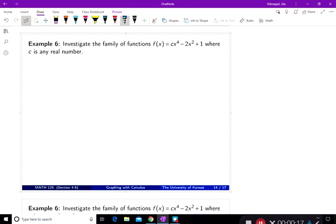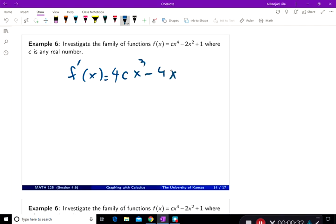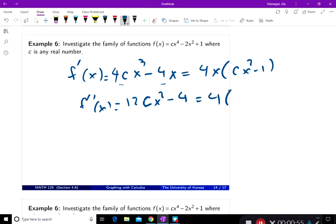If I'm trying to find how these shapes look like, the first thing I want to do is take the derivative of this because it's a polynomial. The derivative is going to be 4cx^3 - 4x, and I can factor out x and 4, so 4x(cx^2 - 1). And then f''(x), I'm going to take the derivative this way, and so it would be 12cx^2 - 4, which is basically 4(3cx^2 - 1).